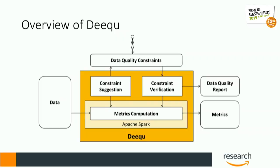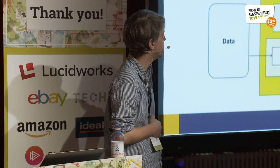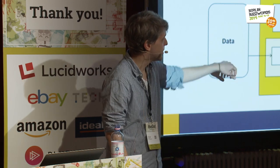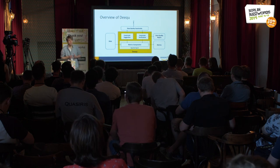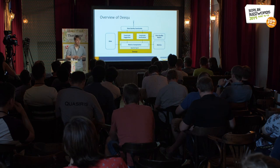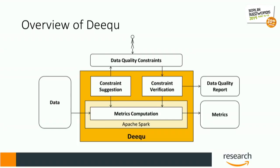Here's a schematic overview of DQ, shown in yellow. There are basically two inputs: the first one is data, and the other is you as the user interacting with the framework. The user defines data quality constraints. At the center of DQ are metrics computations, backed by Spark — I'll talk about why in a minute. When these metrics have been computed, they meet the user-defined constraints, and depending on the outcome of that constraint verification, the tests either fail or succeed, giving you an indication of whether data quality is at the desired level.